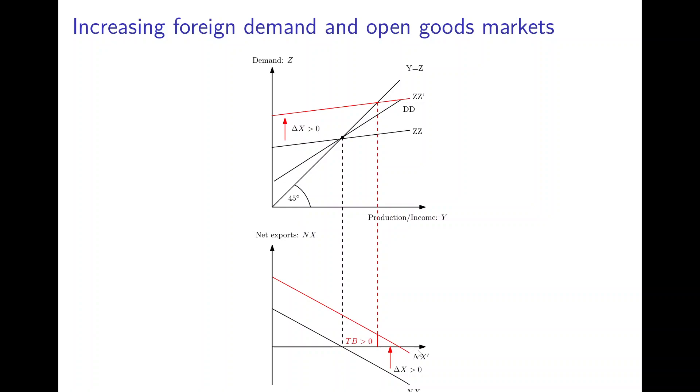If we draw this new NX prime curve, then it will intersect with the horizontal axis here where we have zero at the point where the DD curve and the ZZ prime curve intersect in the diagram above.